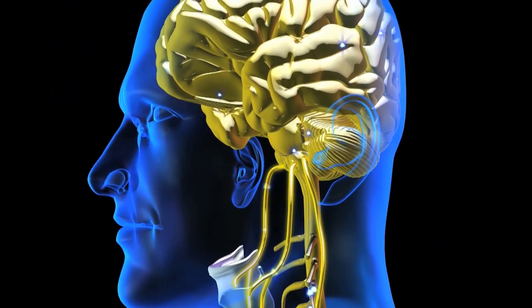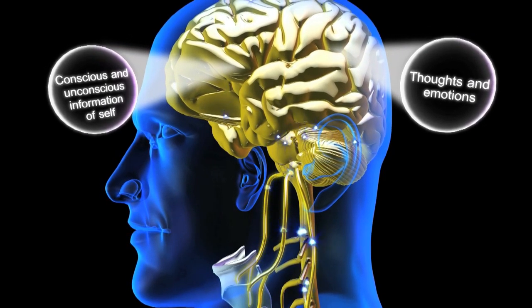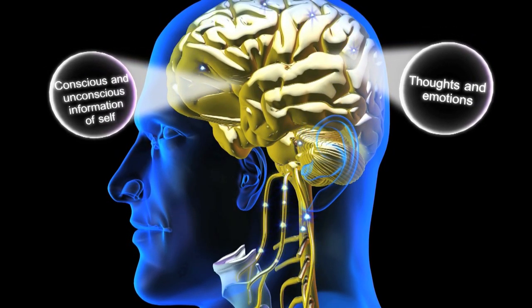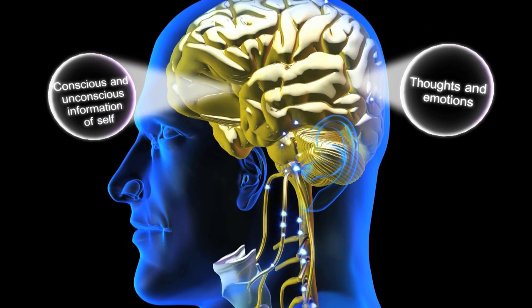The brain and nervous system also contain a person's thoughts, emotions, intention and both conscious and unconscious personality characteristics.